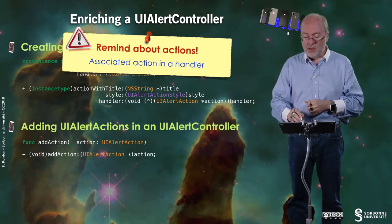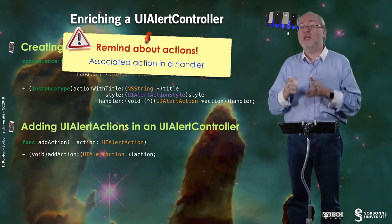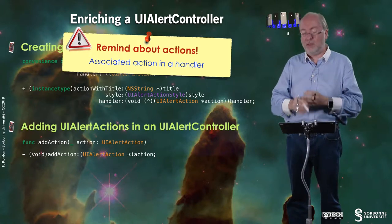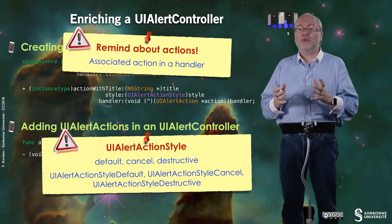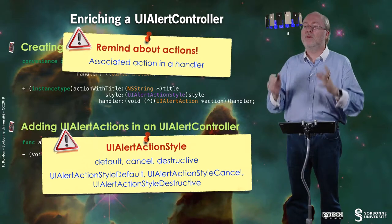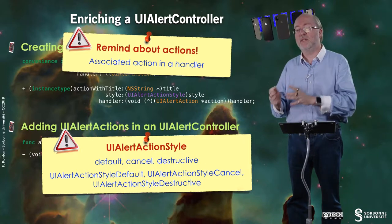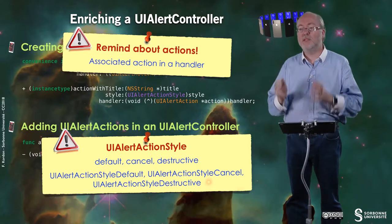Here, this method provides you the UIAlertAction that is selected as a parameter and returns nothing. I also remind you that you have several UIAlertAction styles. These are the names of these styles in Swift and the names in Objective-C. I already detailed what they mean in the previous slide.